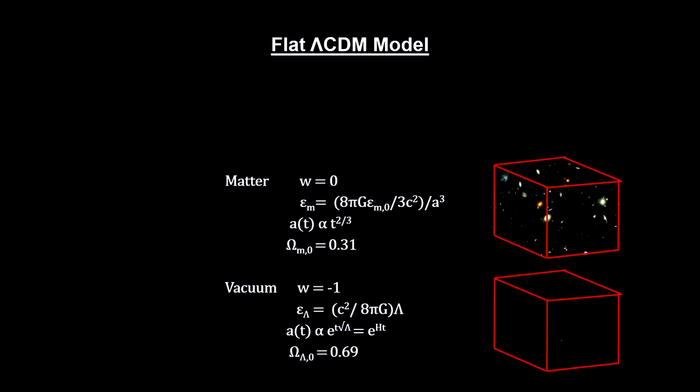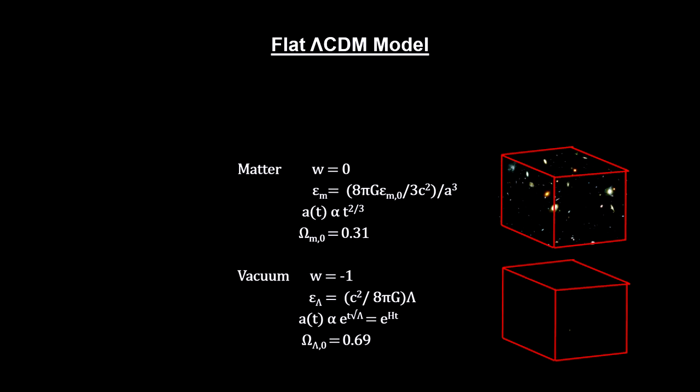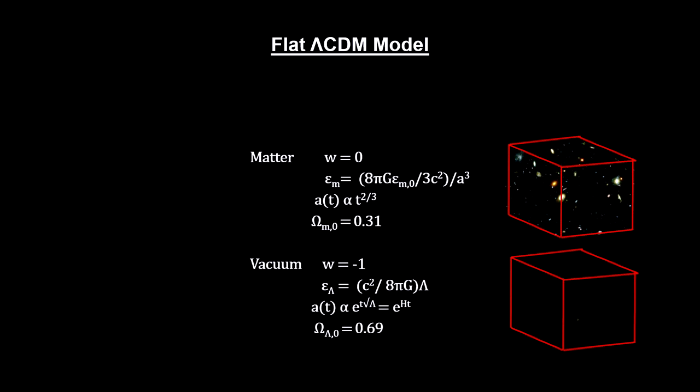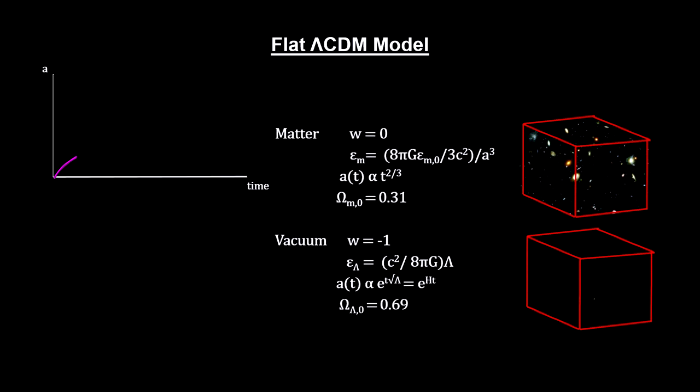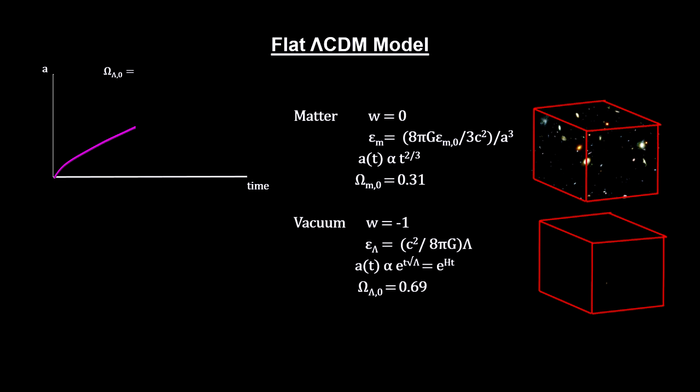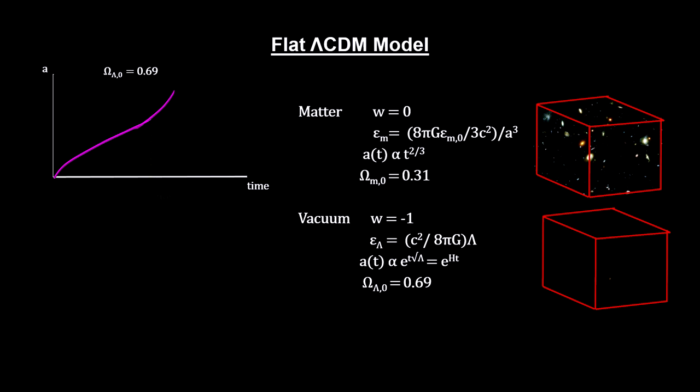Therefore, the total amount of vacuum energy increases with the volume of the universe. In a small universe, it would have little impact. But today, it is almost 70% of the energy density of the universe, filling the gap left by the matter-radiation-only number.